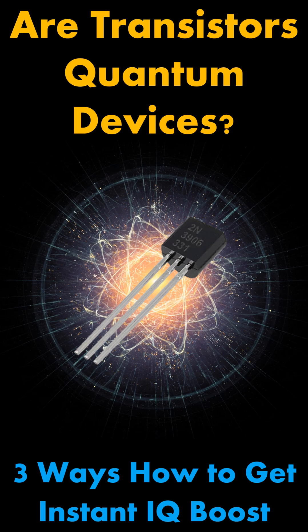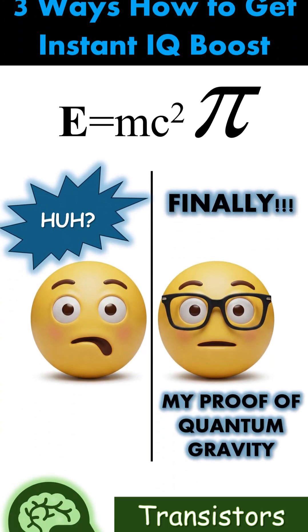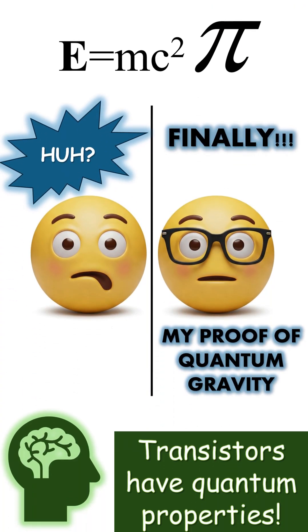Are transistors quantum devices? Or: three ways how to get an instant IQ boost. One — put on clear glasses without prescription lenses with thick frames; the thicker the frame, the more IQ boost. Two — add pi in your formula. Three — claim that something is quantum, or even better, claim that it exhibits quantum properties.